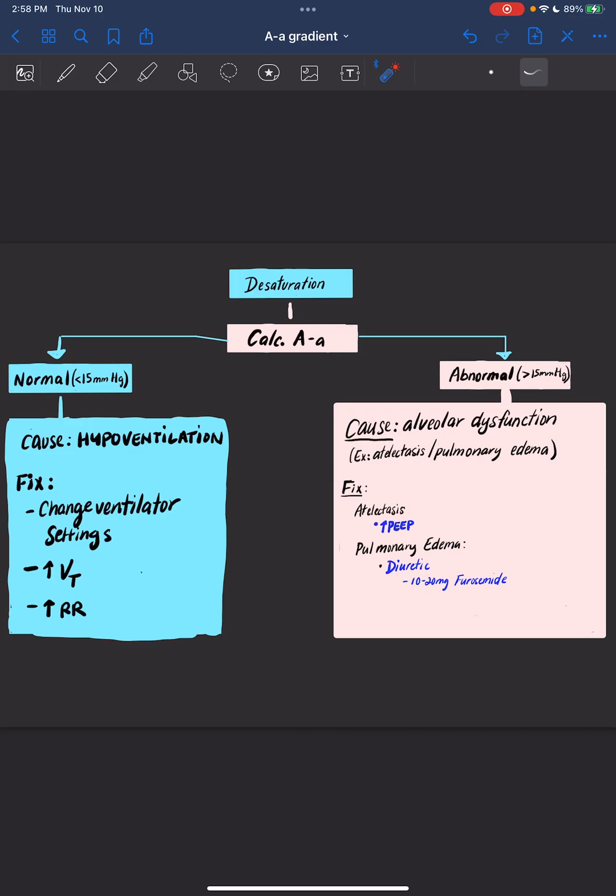So our patient desaturated and we figured out that our A-a gradient is abnormal. If it's atelectasis, we can perform alveolar recruitment maneuvers, such as increasing the PEEP. If it's pulmonary edema causing it, we can give them a diuretic.